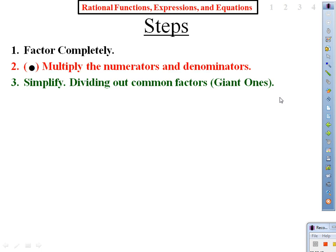Copy the steps for multiplication of rationals — three steps. Step one: factor completely. Step two: multiply the numerators and denominators. Step three: simplify by identifying giant ones.